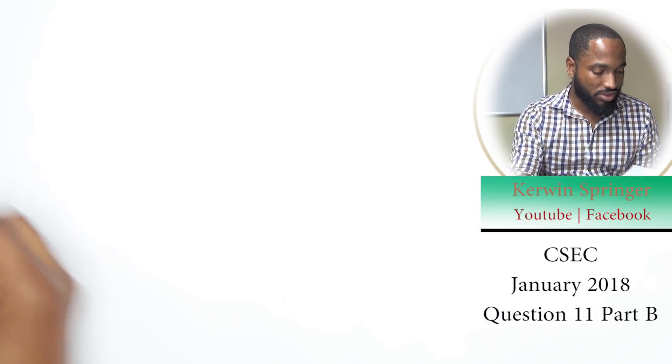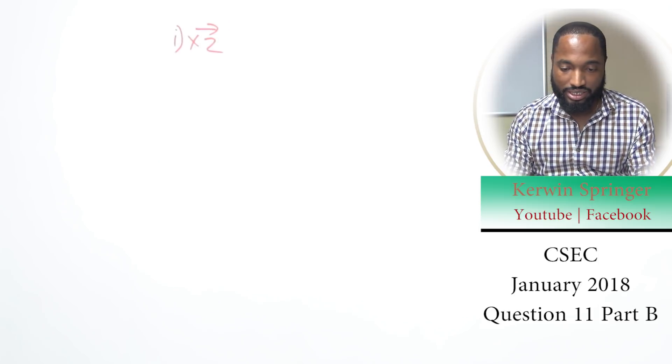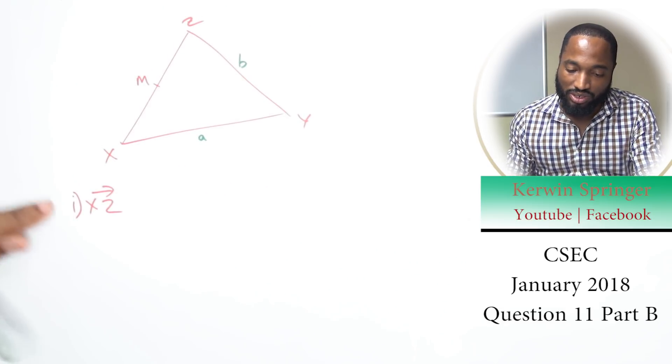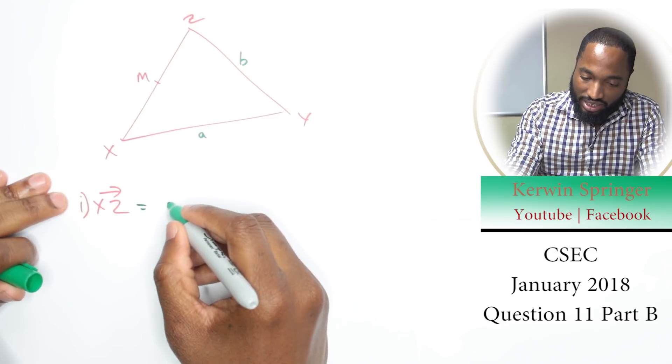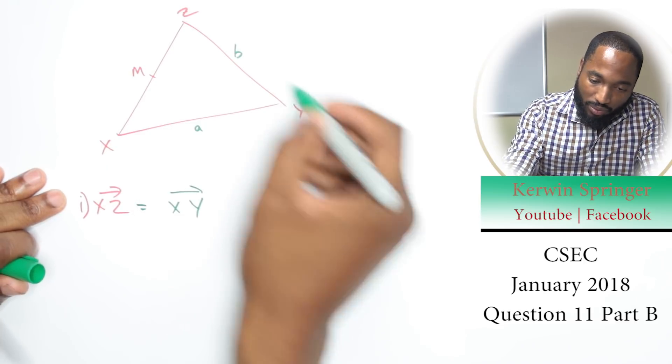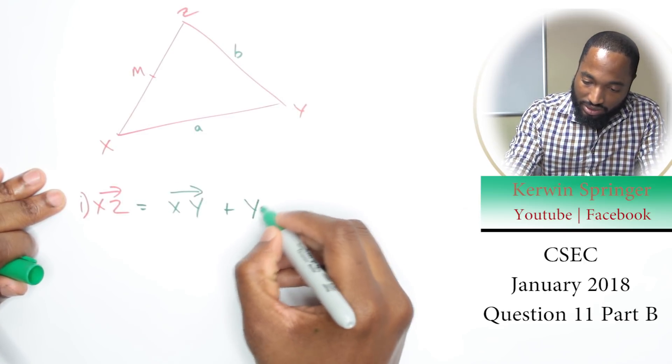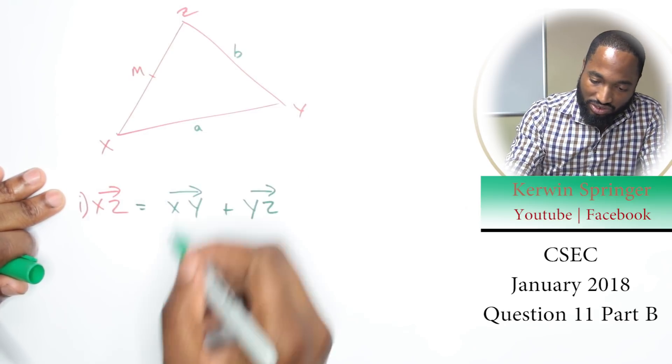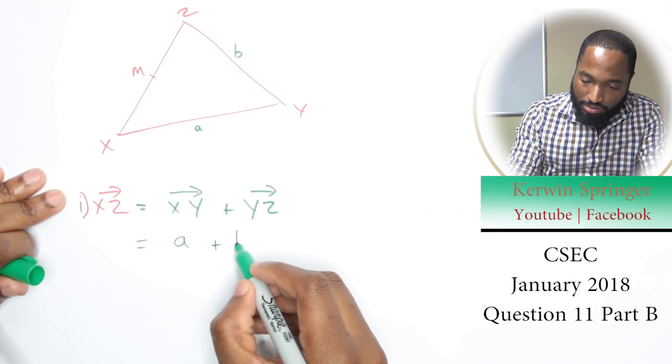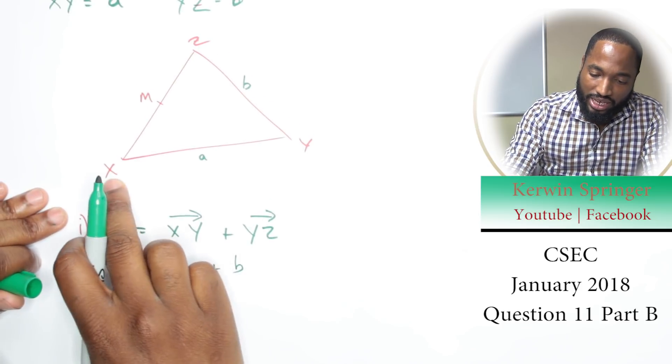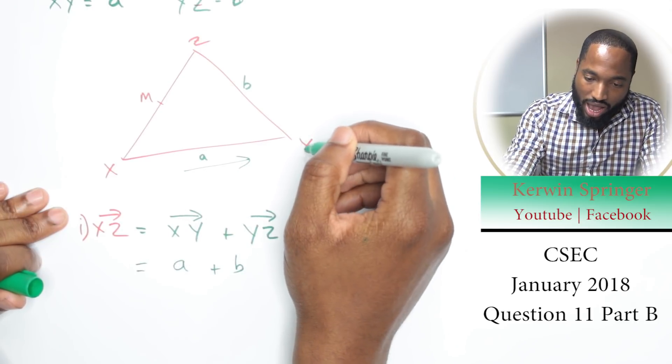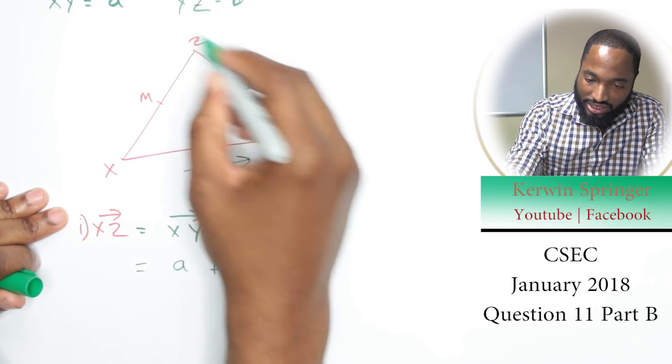From your diagram, you can deduce that XZ is equal to vector XY plus vector YZ, because we go to Y then from Y to Z. So XZ is really a plus b. Now there's something I left out—we said XY is a, so I should put a little arrow here showing this is a. And YZ is b, so there's a little arrow here showing this is b.